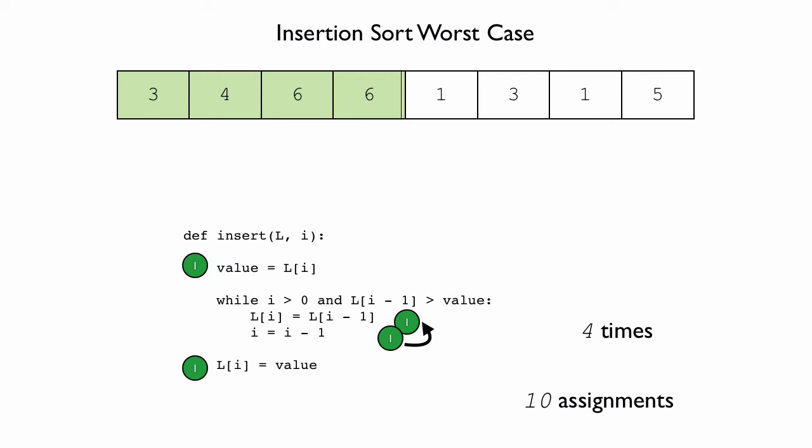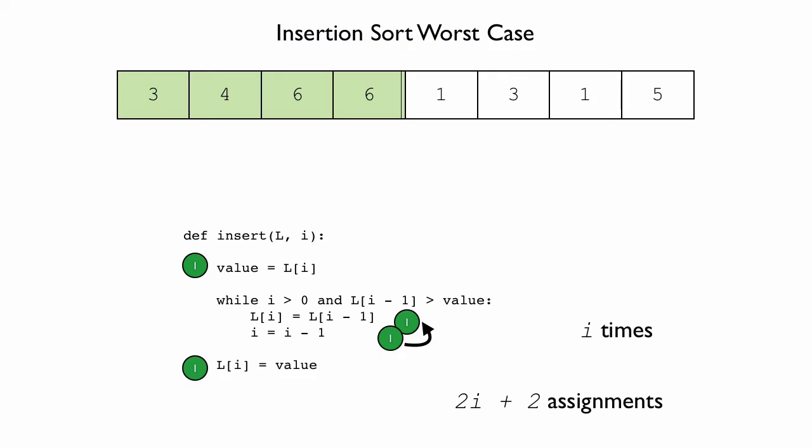Now let's consider the general case. For any value of i, how many times is the loop going to iterate? In the worst case, when the second half of the while condition is always true, we depend on the first part, which says this will run as long as i is strictly greater than 0. So it's going to run once for every time we decrease i — therefore, it's going to run i times. In the general case, the number of assignments is two assignments every time the loop runs, which is 2 times i, plus one at the beginning and one at the end, for a total of 2i plus 2 assignments. This makes insert a linear running time function in the worst case for i.